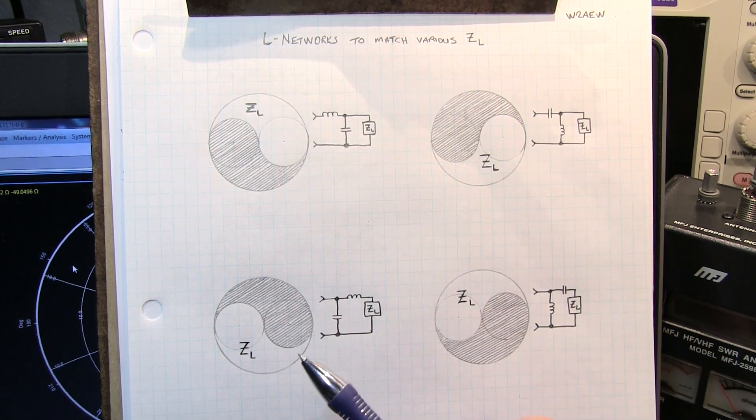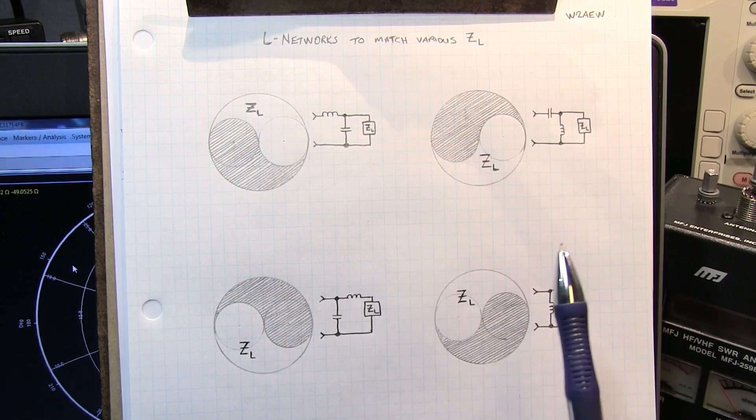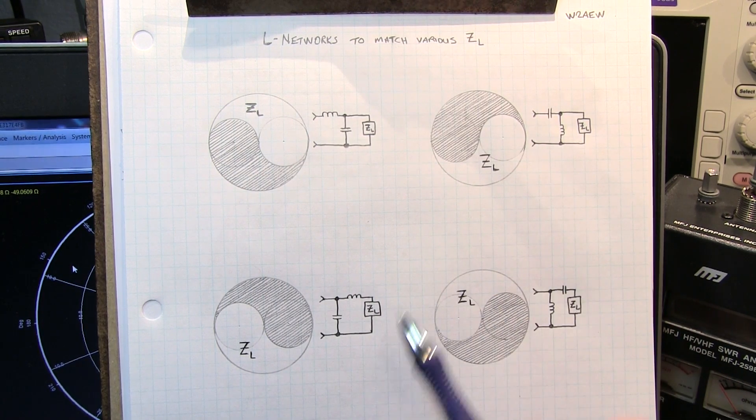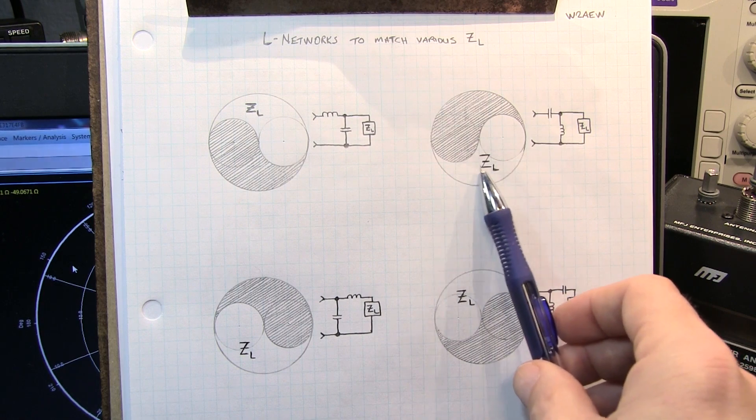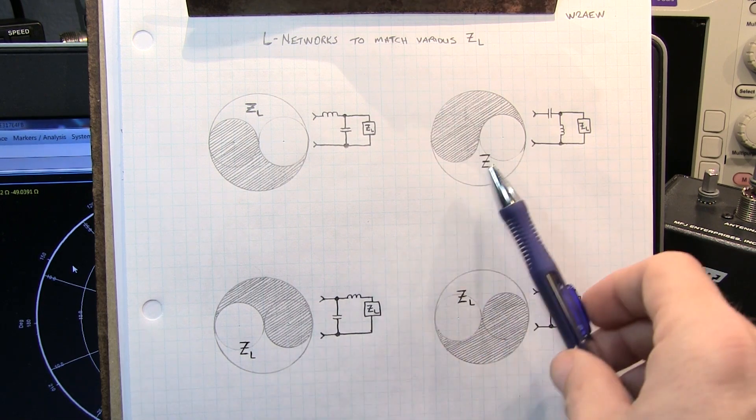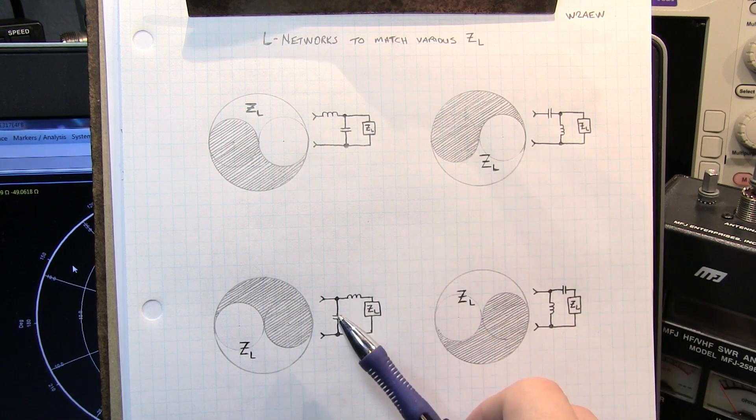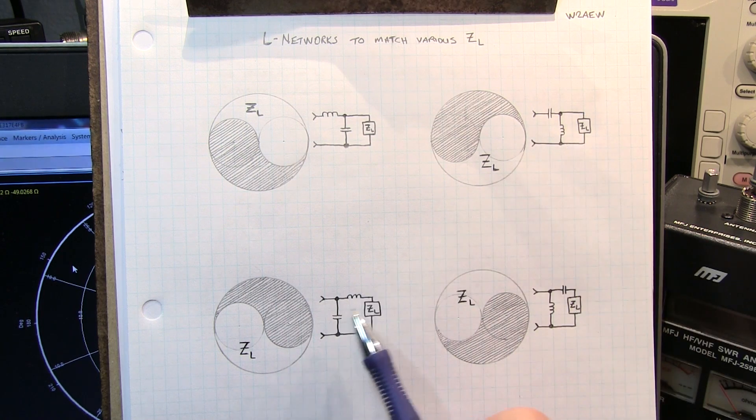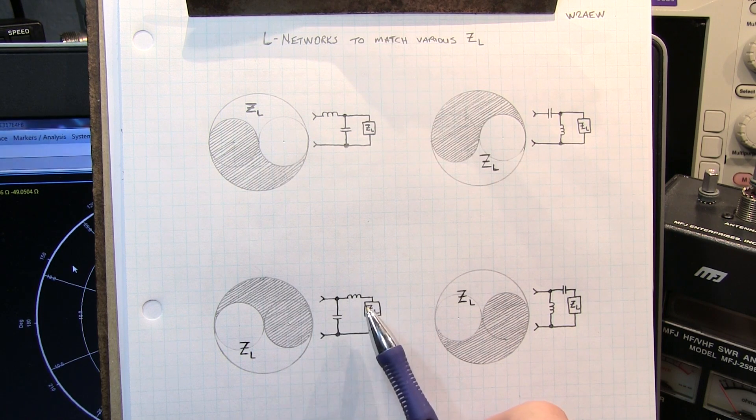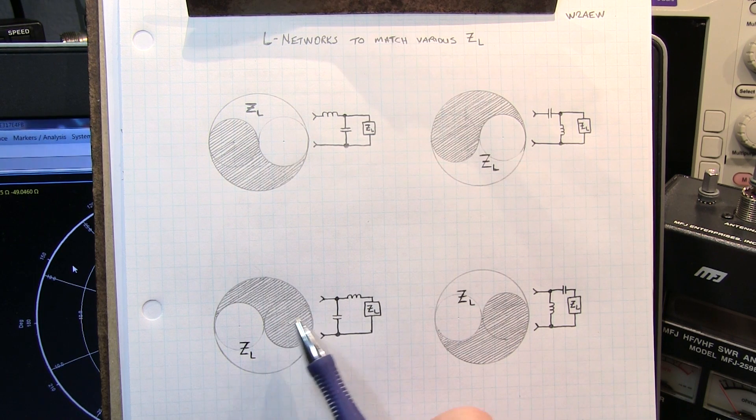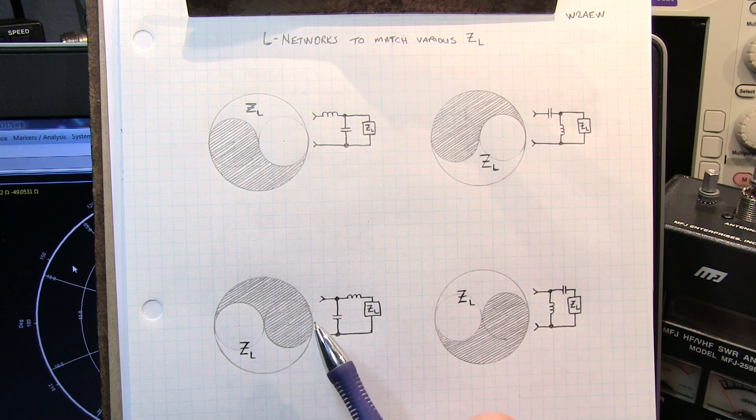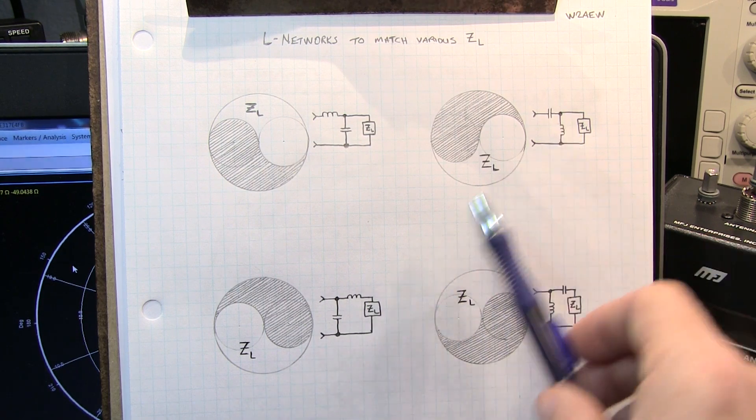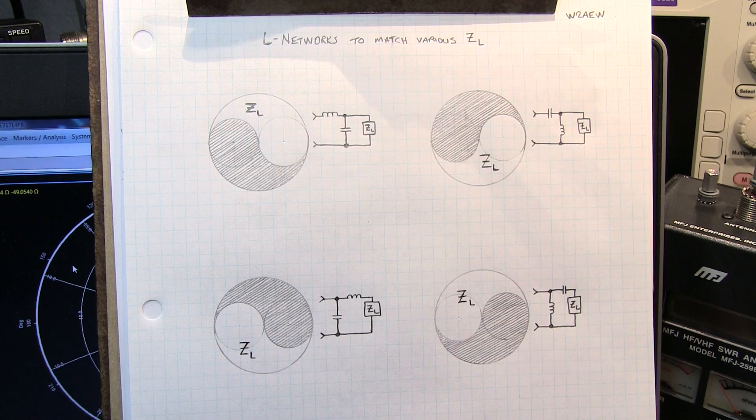So when you have two possibilities, which one do you use? Well, there could be a number of configurations. If you look at, as I described, a load that is down in this area that could be matched by either of these two networks, you might say, well this one is essentially a high pass network, this one is a low pass network. So this one might be favorable because it might help to reject some higher order harmonics that might be coming from your transmitter. But at the end of the day, it comes down to personal preference and even maybe what components you have on hand.